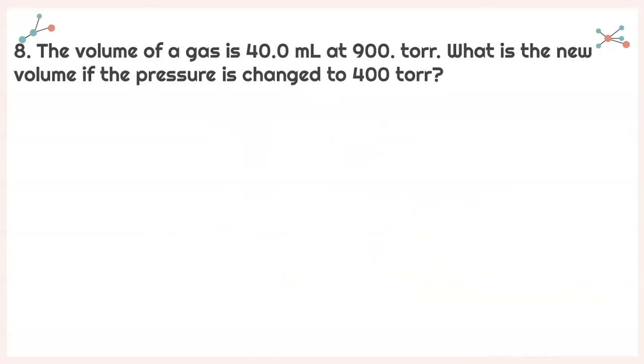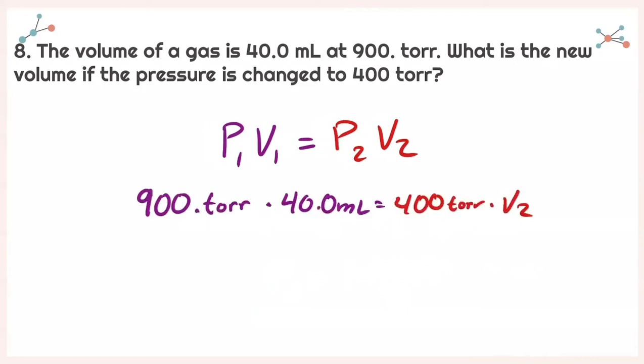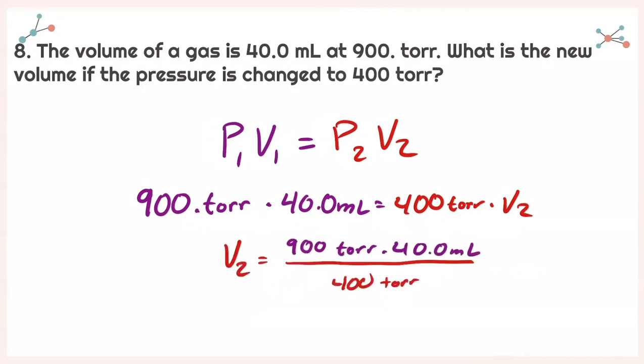For number 8, the volume of a gas is 40.0 milliliters at 900 torr. What is the new volume if the pressure is changed to 400 torr? Same equation: P1 times V1 equals P2 times V2. Isolating V2: 900 torr times 40.0 milliliters divided by 400 torr. After plugging into my calculator and applying sig figs, I get 90 milliliters.